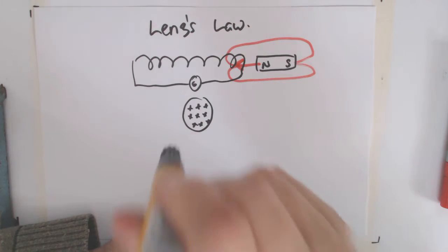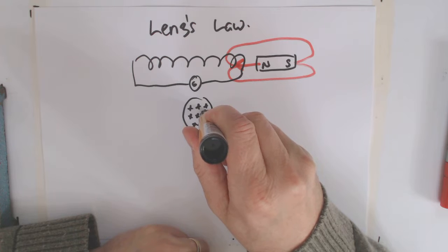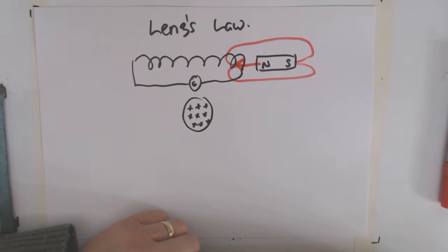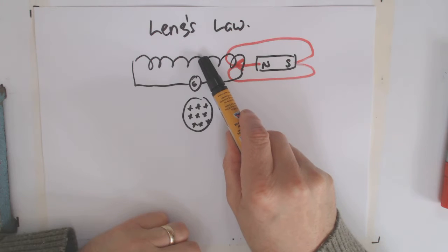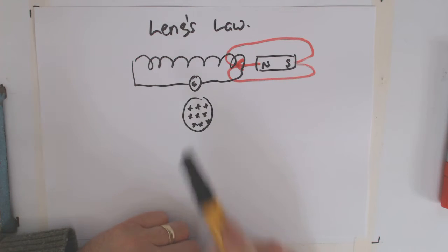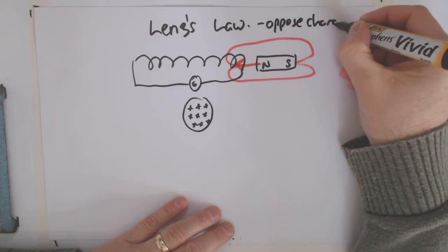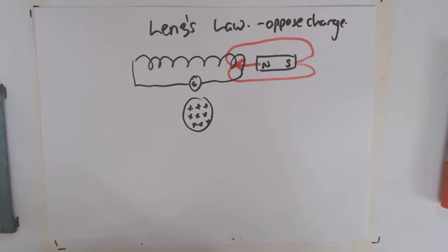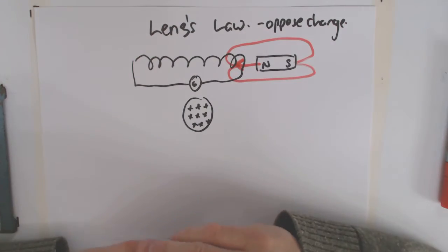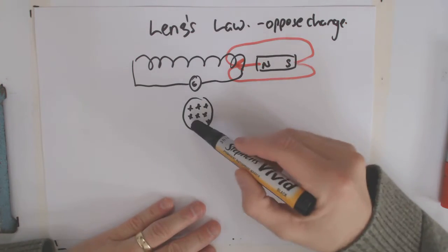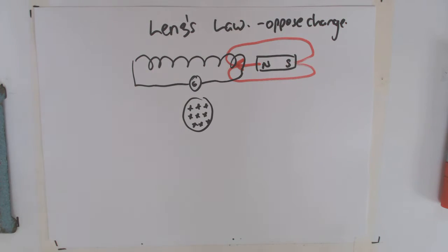So if the field is increasing in strength into the coil, then it's going to produce its own magnetic field coming back the other way. And the only way a wire can produce a magnetic field is by making a current flow in it. So this whole solenoid will make a current flow in itself to produce a magnetic field to oppose the change. That's what Lenz's Law is all about — if there's a changing field on the inside of a conducting loop, that changing field causes an induced voltage in the loop, and the direction of it is to oppose the change.